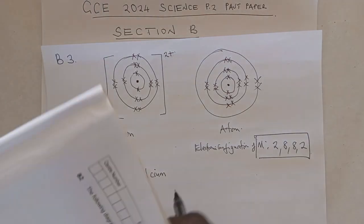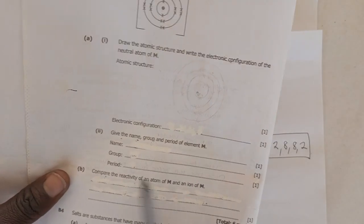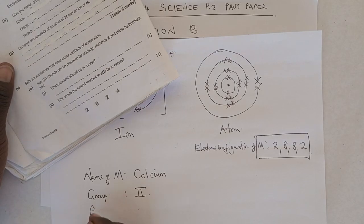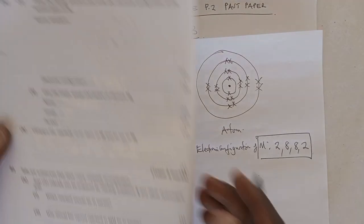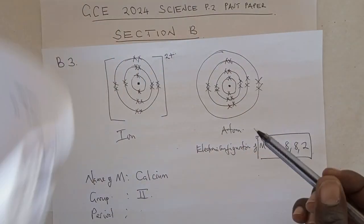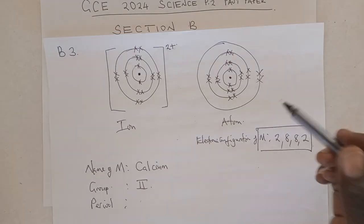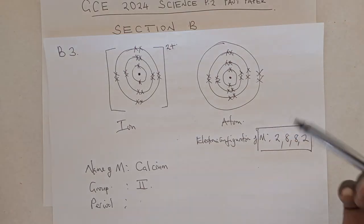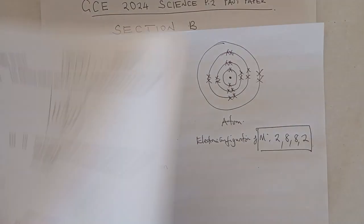Now, we are told to also name the period. The period. So, in which period is calcium found? So, the answer there, even before going to the periodic table to find the period, it should be period 4. Why am I saying so? Because it has 4 shells. One, two, three, four. Must be found in period 4. So, let's go and try to prove that.